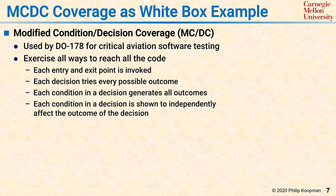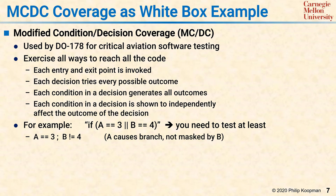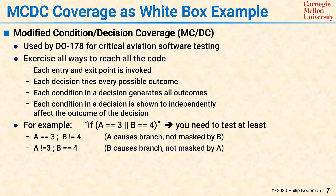As an example, the condition clause "if A is equal to 3 or B is equal to 4": for branch coverage, you just need to test that it was true and that it was false. For MCDC coverage, you have to say: if A is 3 and B is not 4, then we know A activates the true statement. If A is not equal to 3 and B is 4, then we know that B can activate the true statement. And if both A is not equal to 3 and B is not equal to 4, we know that the ELSE can be activated, even if it's just a fall through.